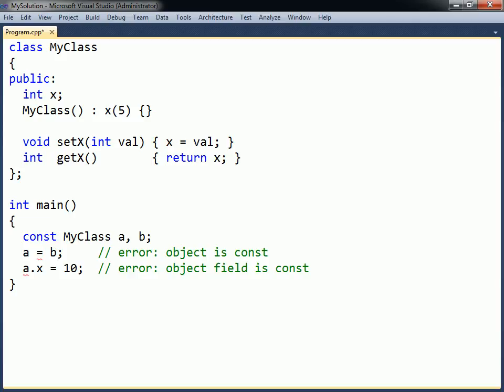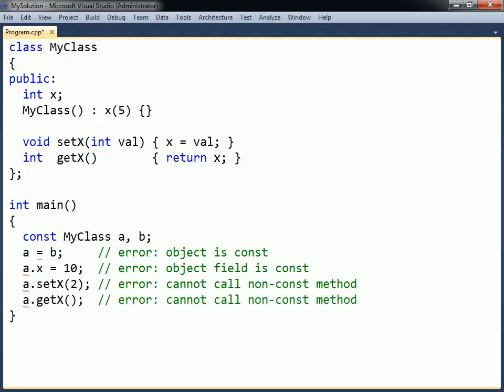Because of this restriction, a constant object may not call a non-constant method, since such methods are allowed to change the object's fields. They may only call constant methods, which are marked with the const modifier before the method body. This const modifier means that the method is not allowed to modify the state of the object.